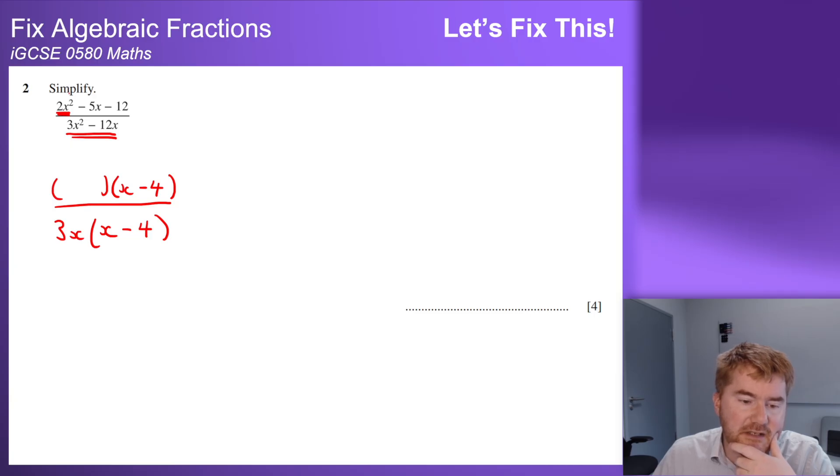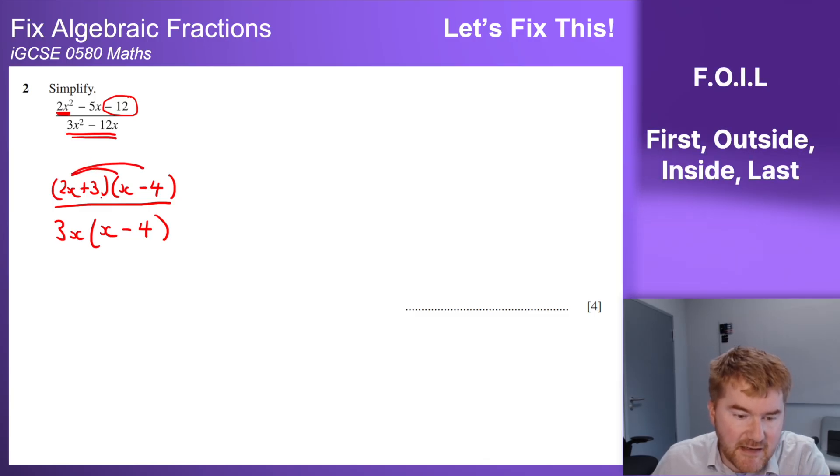Well, to get 2x squared I need to have a 2x, because 2x times x is 2x squared. I want to get a minus 12 at the end. What do I multiply minus 4 by to get minus 12? Well, positive 3. And you can double-check the top is correctly factorized by using FOIL - first, outside, inside, last - to check we get the same thing at the top.